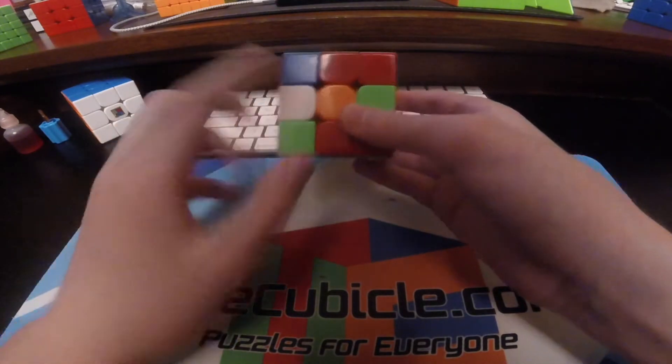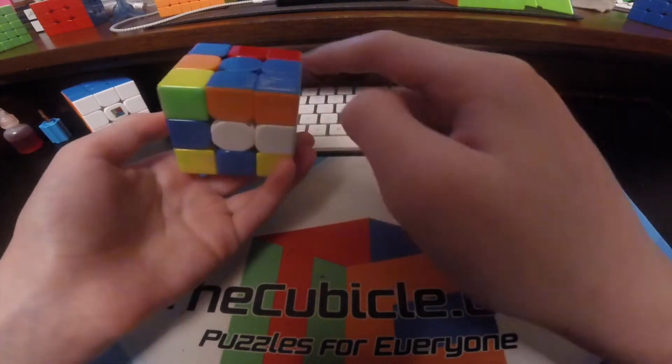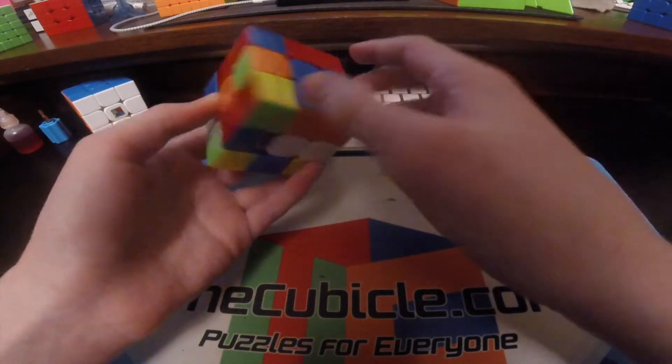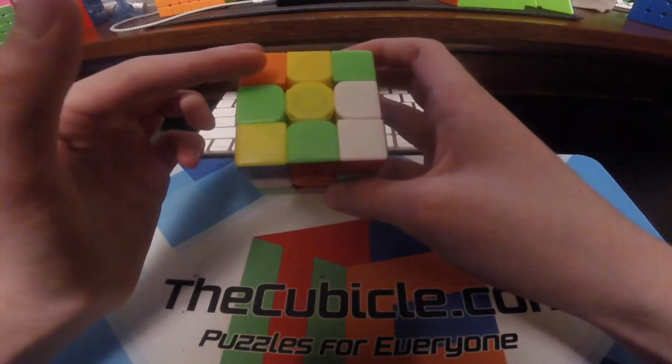During inspection, I saw the cross pieces were here, here, here, and here, and I have this block to make an X cross with. My first pair is going to be the orange-green.